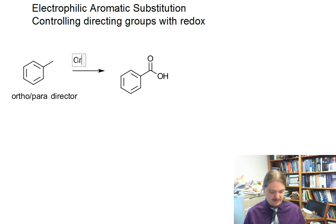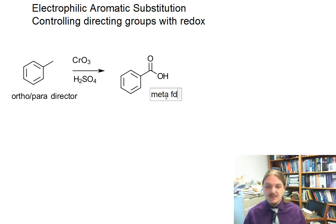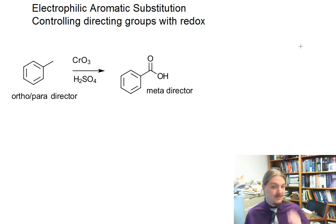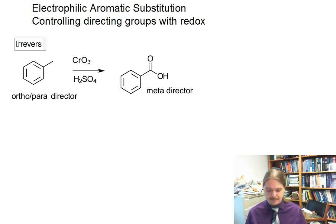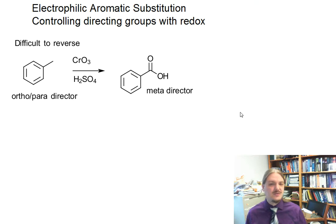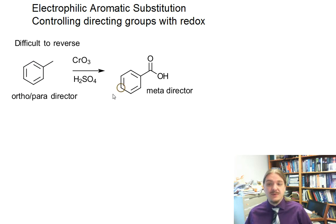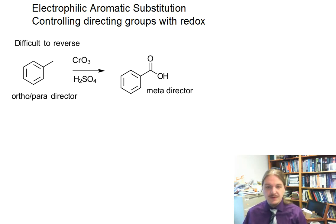Alkyl groups — alkyl side chains on benzene — can be oxidized using chromic acid and some other oxidizing agents to carboxylic acids, which are meta-directors. This video is just going to highlight some examples of reactions that can be done this way. These reactions are in the category of difficult to reverse. I'm not saying you can't ultimately convert the carboxylic acid back into the methyl group, but it can't be done in one reaction. A whole range of alkyl groups can be converted into carboxylic acids this way.